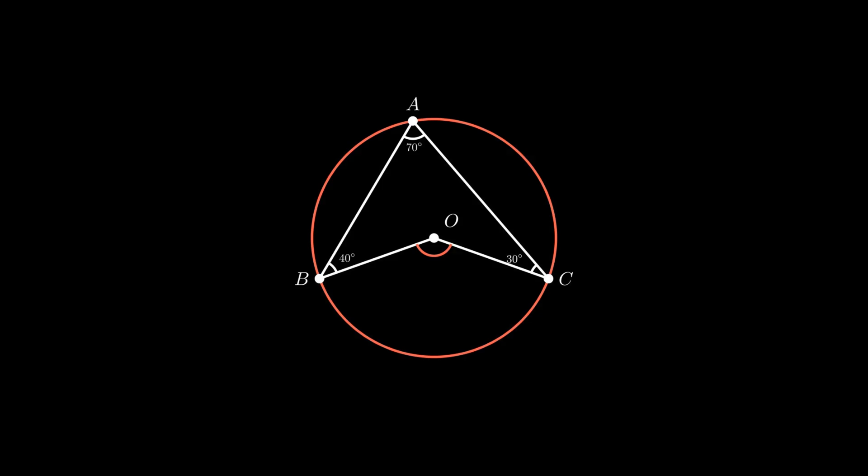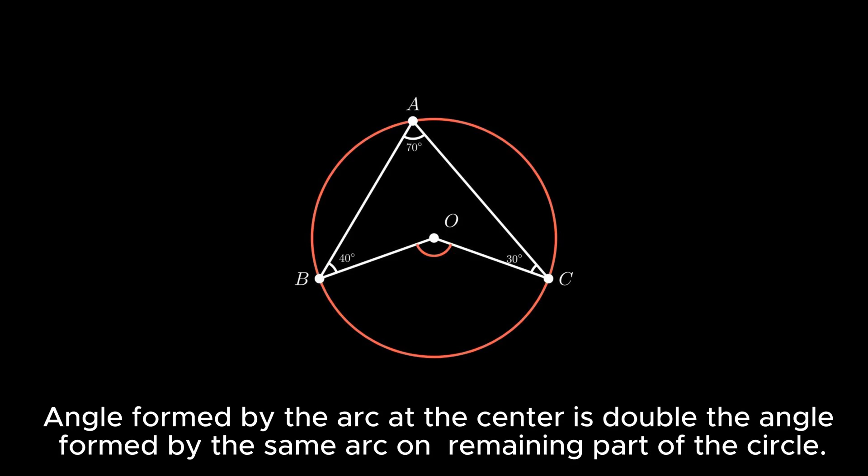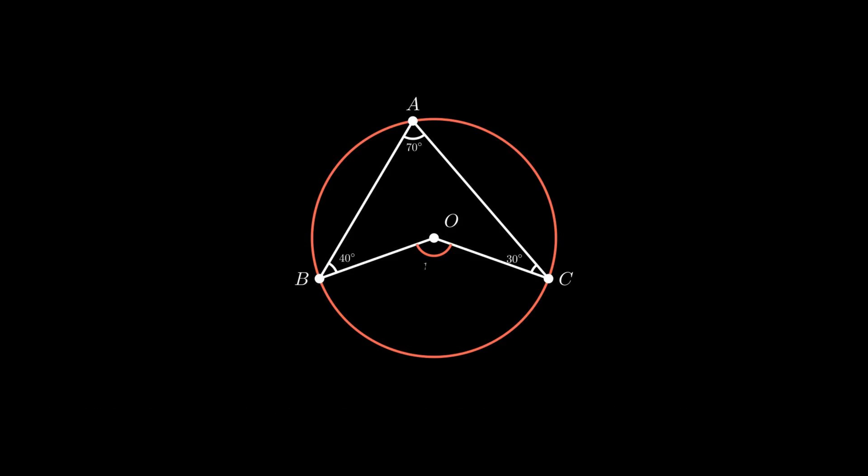Now angle BOC is the angle formed at the center by arc BC. Therefore, using the theorem that the angle formed by an arc at the center is double the angle formed by the same arc on the remaining part of the circle, angle BOC is twice angle BAC, which is equal to 140 degrees.